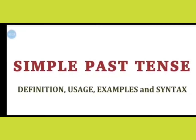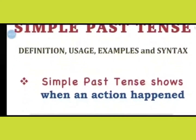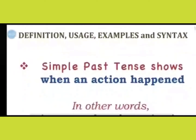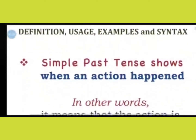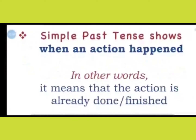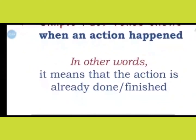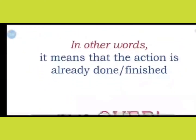So first of all, what is past tense? How would you define past tense? Simple past tense shows when an action happened. In other words, it means that the action is already done or finished. So we can say the action is over.